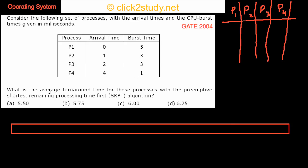We have to find the average turnaround time for these processes with the preemptive shortest remaining processing time first algorithm. So there's this preemptive algorithm, that means that in the middle if necessary some process can be kicked out if a process with better priority comes, higher priority, and we'll find the average turnaround time.